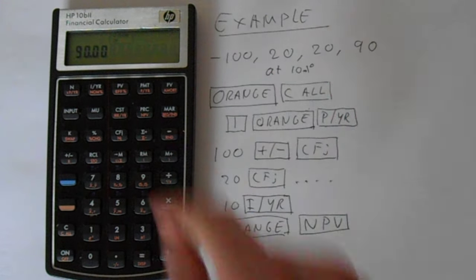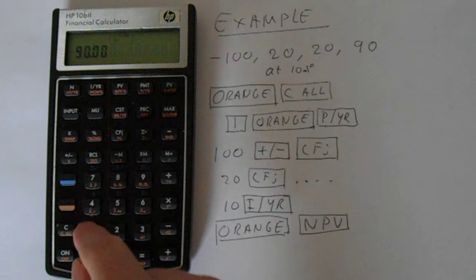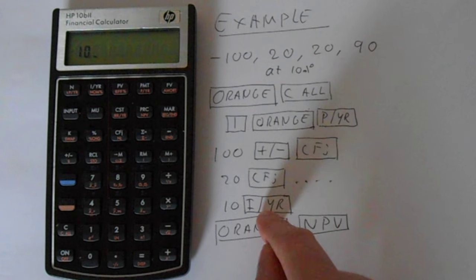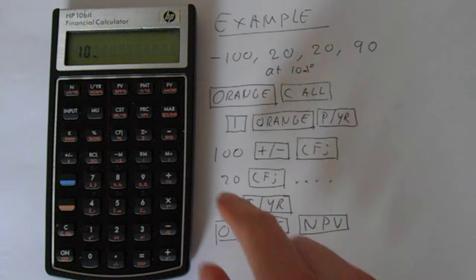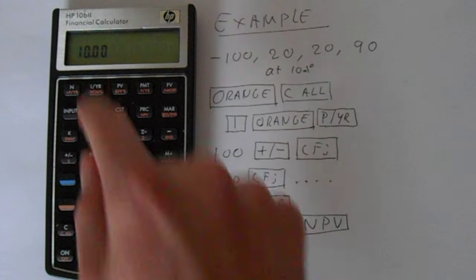So we've got 0, 1, 2, 3. This is correct. Then we have to put 10 into the rate per year. So we've put 10 in there, and then I per year.